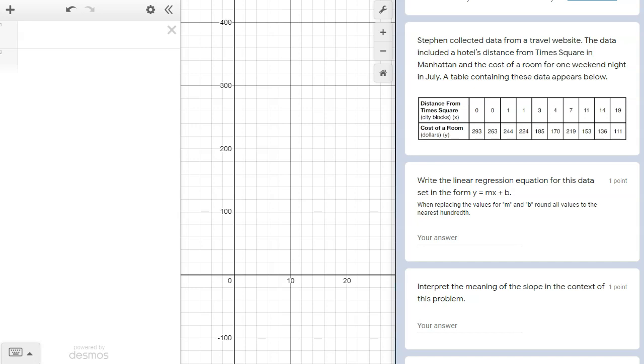I also want to do a quick scan of the data to see what I noticed before using the calculator. I can see that as the distance from Times Square gets larger and larger, the cost of the room decreases. This makes sense because travelers will pay a premium price to stay in a hotel in the heart of Manhattan where all the popular destinations are.